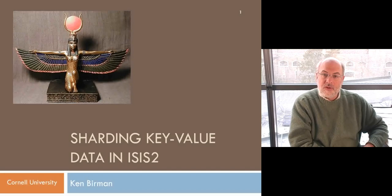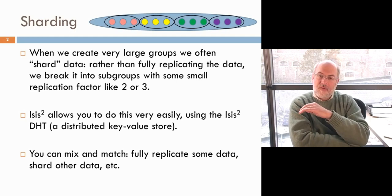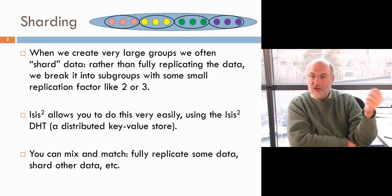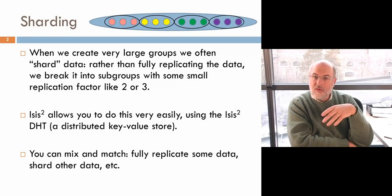Another ISIS feature relates to what's called a distributed hash table. In modern computing systems, it's become very common to pull large amounts of data into the cloud, and we don't necessarily want to replicate all of that data on every node. On the other hand, if we pull a piece of data into the cloud and only keep it on one node, then if that node crashes, we end up losing our data.